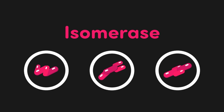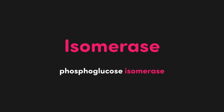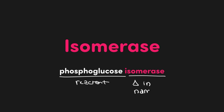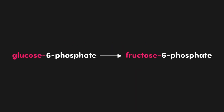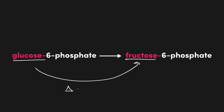Now let's move on to isomerases. The name kind of gives it away — they're going to generate isomers, including structural isomers as well as stereoisomers. An example would be phosphoglucose isomerase. It describes a reactant, so we would expect some sort of glucose with a phosphate on it to be isomerized. With the isomerase, you tend to see a change in the name of the molecule. For example, glucose 6-phosphate goes to fructose 6-phosphate — the isomerase changed the glucose into a fructose molecule.